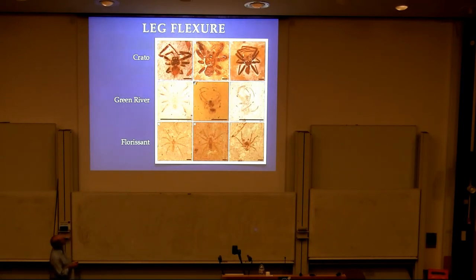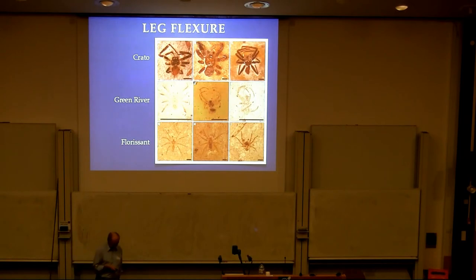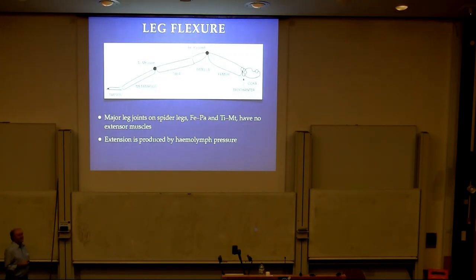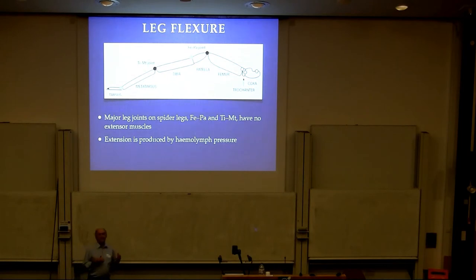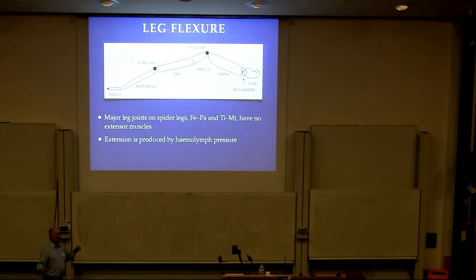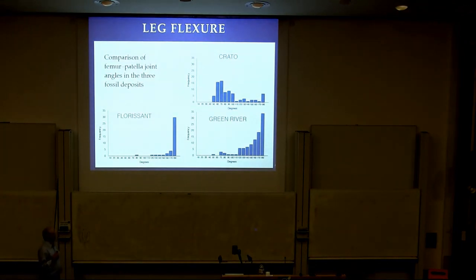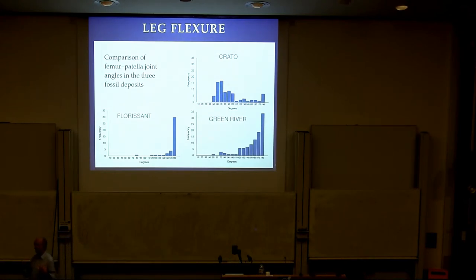Here's a comparison: examples of Crato Formation spiders with legs very much curled under the body. Florissant spiders, as I mentioned, are all spread out. Green River is kind of in between. What is unique to spider legs is that the two major flexure joints — the femur-patellar joint and the metatarsus joint — have no extensor muscles, only flexors. So a spider can flex its legs, and the only way to extend them is by haemolymph pressure — it's a hydrostatic system.